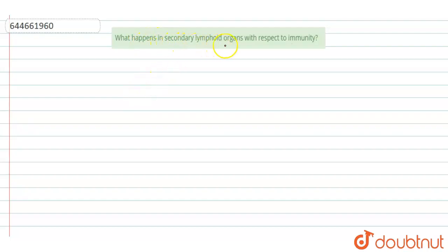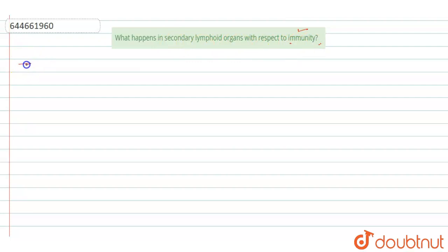Hello everyone. The question here is: what happens in the secondary lymphoid organs with respect to immunity? So the question is asking about the secondary lymphoid organ with respect to immunity. Firstly, what is immunity?